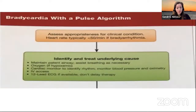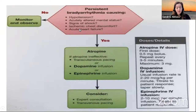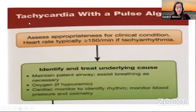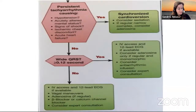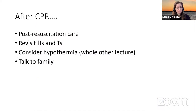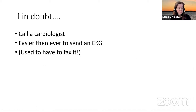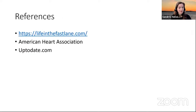For bradycardia and tachycardia, really think about whether the patient is actually symptomatic. If so, you start whipping out drugs, pacing, and so forth. Otherwise, watch and wait — you have a little bit of time. Same with tachycardia: is it symptomatic? Do we have time to figure it out? If not, you're resorting to cardioversion and other cardiac expertise. After CPR or a significant event, you're thinking about post-resuscitation care including hypothermia, revisiting H's and T's, looping in the family, and if in any doubt, calling a cardiologist. When I was an intern we were still faxing EKGs; now we have smartphones and Epic chat, which makes it a whole lot easier.